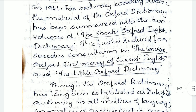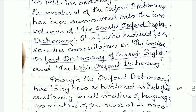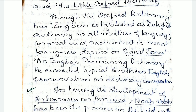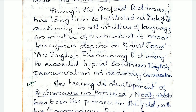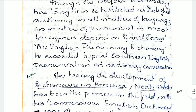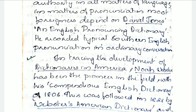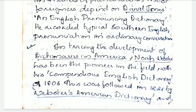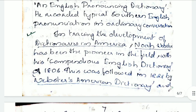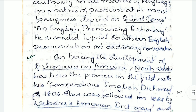It is further reduced for speedier consultation and renamed as the Concise Oxford Dictionary of Current English and the Little Oxford Dictionary. Though the Oxford Dictionary has long been established as the highest authority in all matters of language, in matters of pronunciation most foreigners depend on Daniel Jones. I can bet you all have a copy of Daniel Jones at home, especially for helping with your phonetic transcripts. It is especially for the English Pronouncing Dictionary — he recorded typical Southern English pronunciation in ordinary conversation and followed RP, or Received Pronunciation.